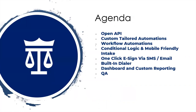It should take about 30 minutes in total. We're going to go over a few of the features that allow you to streamline your client intake and how to put them into practice. One of those features is the OpenAPI and how that's going to help you streamline everything. Then we're going to dive into custom tailored automations, workflow automations, conditional logic, and the mobile-friendly intakes. We're going to go over the one-click e-sign and how you can send it out via text message and email. We're also going to go over the built-in dialer and how it can help schedule calls to help with the intake process and conversion.